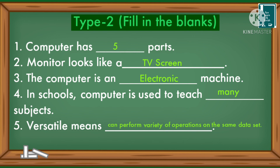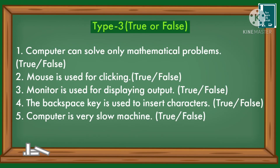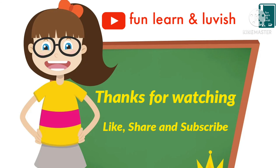Type 3 — True or False: In a computer we can solve only mathematical problems — False. Mouse is used for clicking — True. Monitor is used for displaying output — True. The Backspace key is used to insert characters — False, it is used to delete characters. The computer is used to insert space — False. Computer is a very slow machine — False.